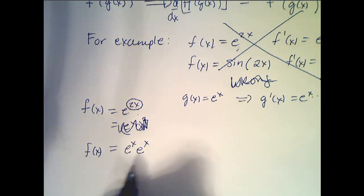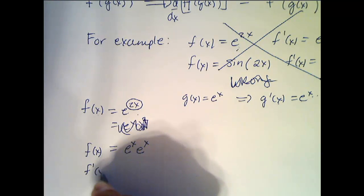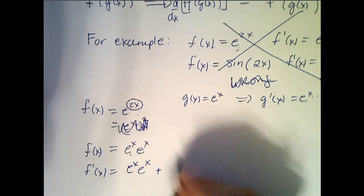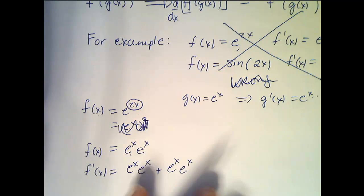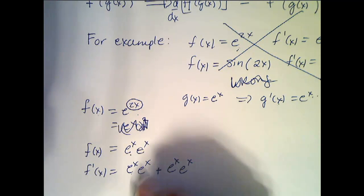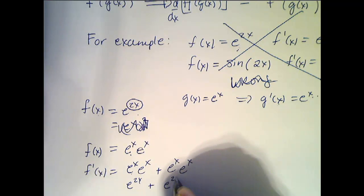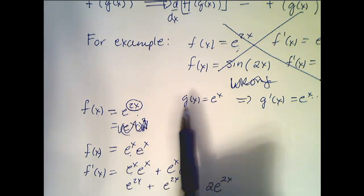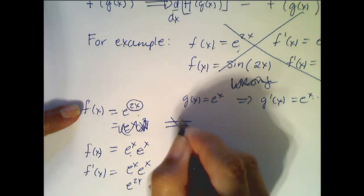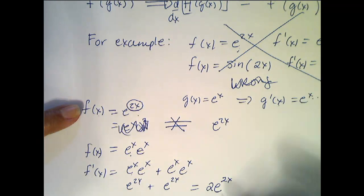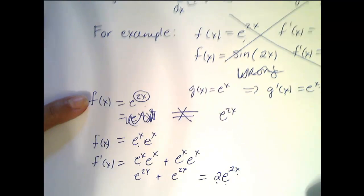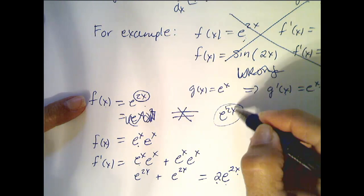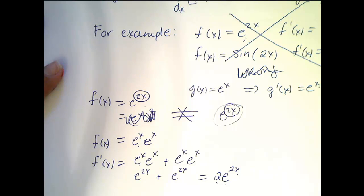Now if I take the derivative of this using the product rule, f'(x) = derivative of the first, e^x, times the second, e^x, plus the first times the derivative of the second. So I get e^x · e^x + e^x · e^x = e^(2x) + e^(2x) = 2e^(2x). So the derivative is not e^(2x) — it's 2 times e^(2x). As foreshadowing, it's the derivative of the outside times the derivative of the inside.